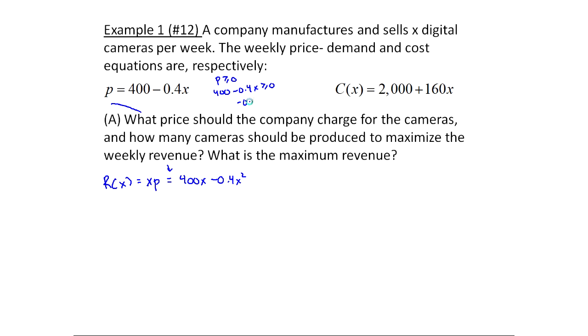So that means 400 minus 0.4x has to be greater than or equal to zero. In other words, minus 0.4x has to be greater than or equal to minus 400. And finally, x has to be less than or equal to, and I got to divide minus 400 by minus 0.4, and I end up with 1000. And we already know this has to be bigger than or equal to zero, so this gives me essentially an interval. We're going from zero to 1000 inclusive.